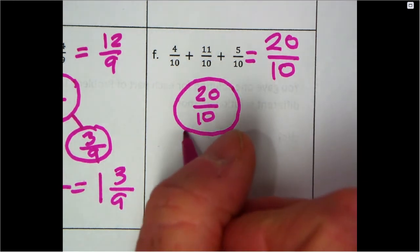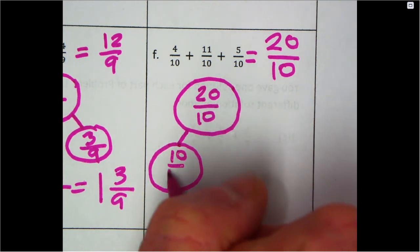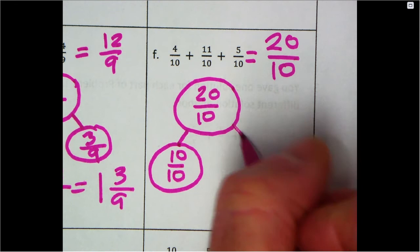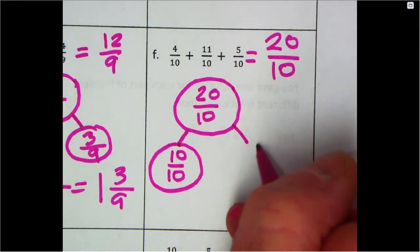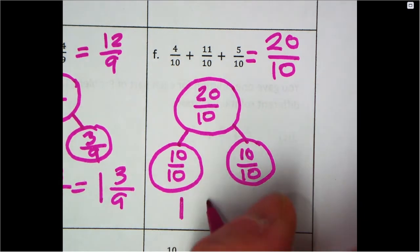What's going to represent one whole? Well, 10/10. And then I'm going to put what's over here: 20 - 10 is 10, and I'm left with 10/10. What's 10/10? One plus one, one whole plus one whole equals 2.